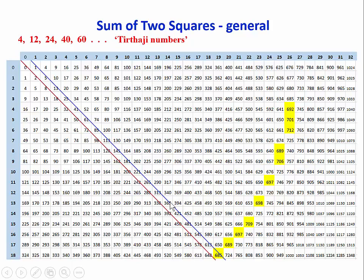In fact, you'll see that for any number on the blue diagonal, the differences from the first number are Tirthaji numbers. So for 365, we have 369 which is 4 more, and then 377 which is 12 more than 365, and so on. And we're going to use that fact to express a number as a sum of two squares.